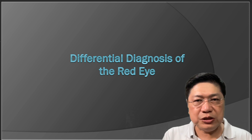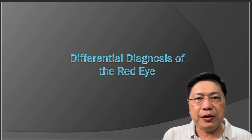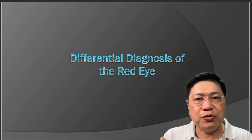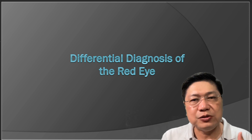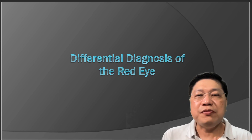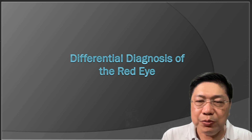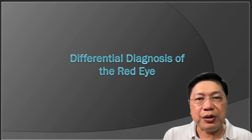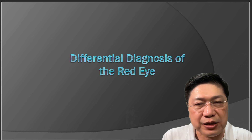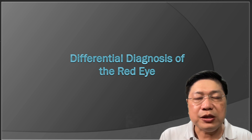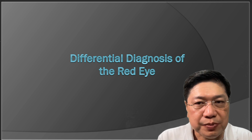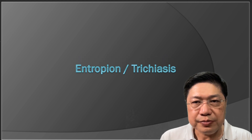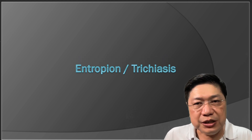Usually it's because of inflammatory or infectious processes, and you need to be able to differentiate what the possible problem is aside from having a red eye. So whenever a patient comes to your clinic and tells you they have a red eye, you need to shift through the different problems in order to find out what your patient's problem is and how to deal with it. Let's go with the differentials.